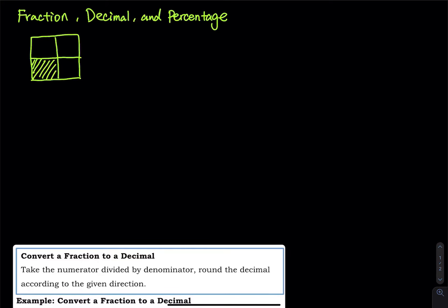So how do you write a fraction? First, we draw a fraction bar. Then we are going to put a number below the bar, and that number is called the denominator. How many pieces do I have? I have four pieces. And then how many pieces did I take? I grab one. The number above the fraction bar is called the numerator.